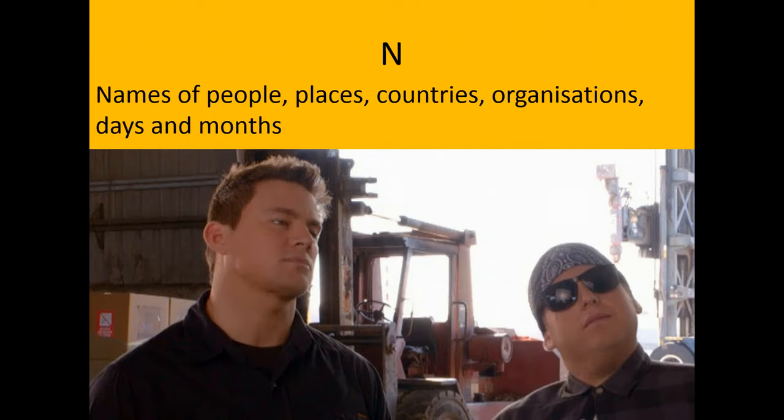N is for names of people, places, countries, organisations, days and months. The example on this picture, of course, would be Jeff — that would need a capital J.